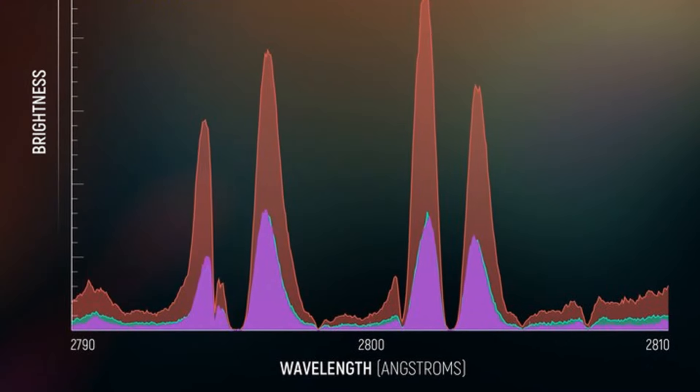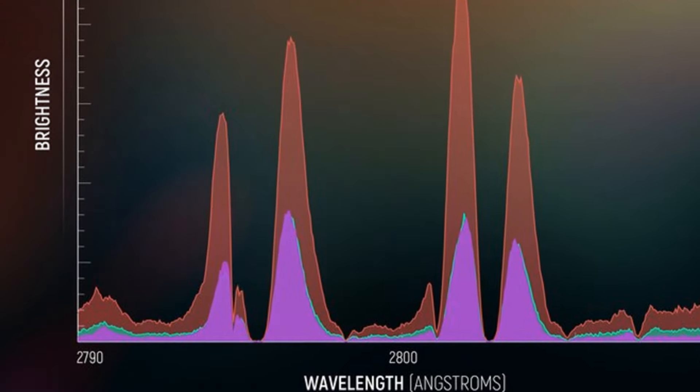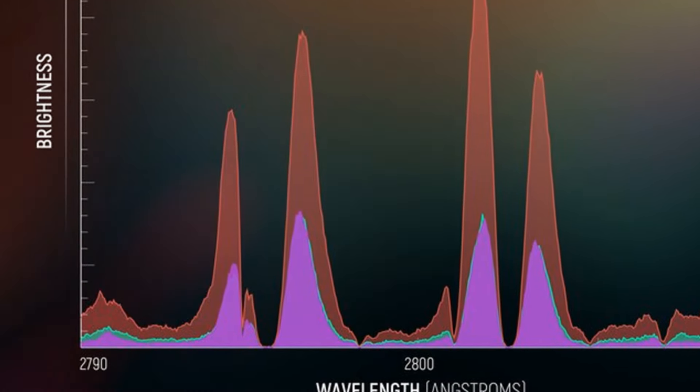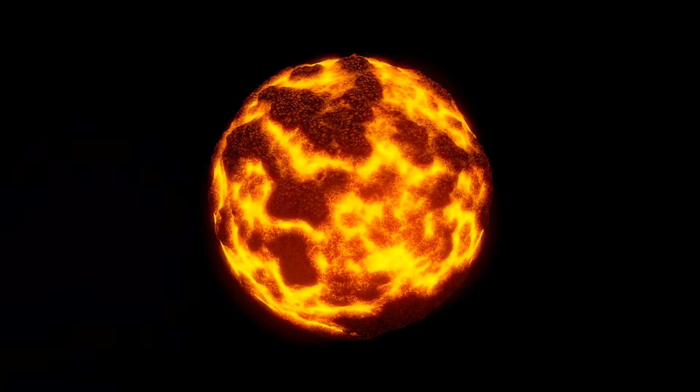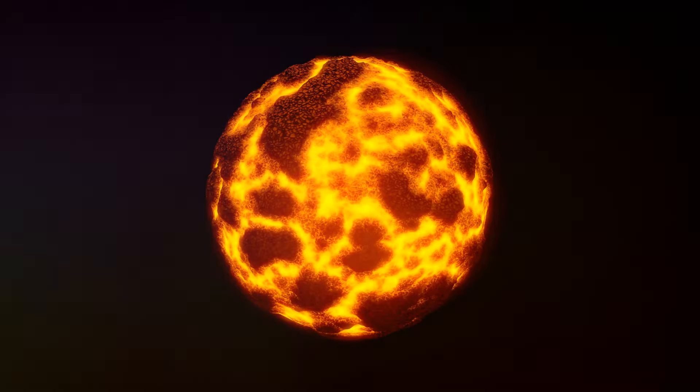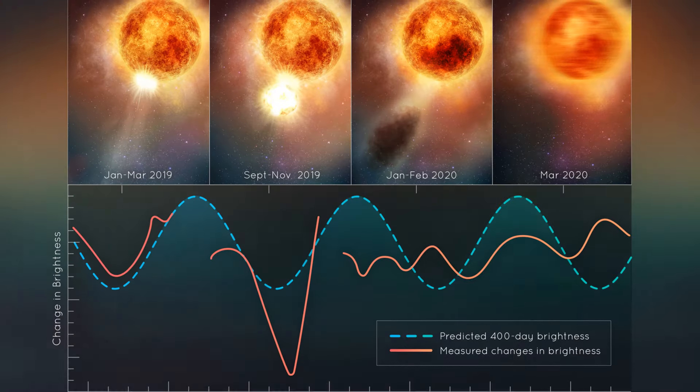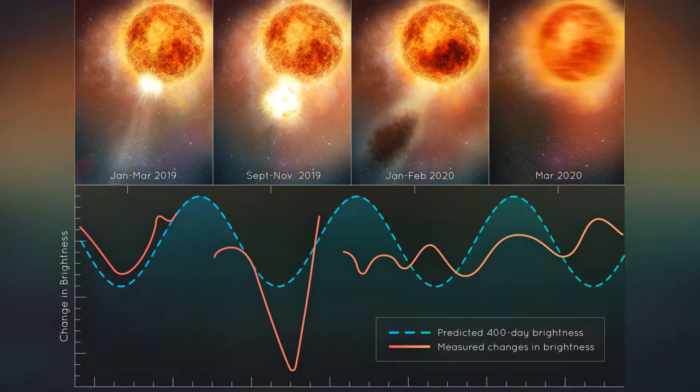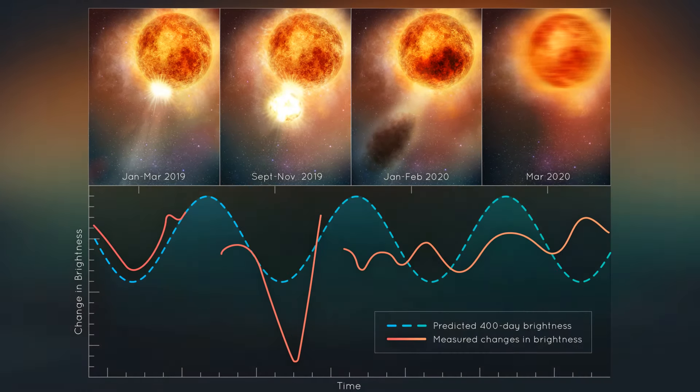Some suggested a massive ejection of stellar material was obscuring the star's light, while others proposed the formation of colossal star spots on its surface. Each possibility offered a tantalizing glimpse into the complex processes at play within a dying star. As months passed, Betelgeuse gradually returned to its normal brightness, leaving astronomers with more questions than answers. The Great Dimming, as it came to be known, became a captivating mystery. A cosmic puzzle waiting to be solved.